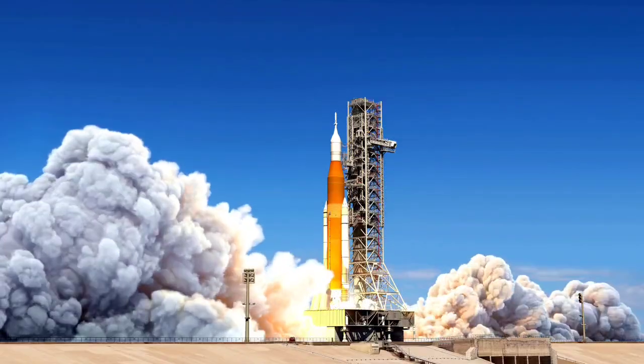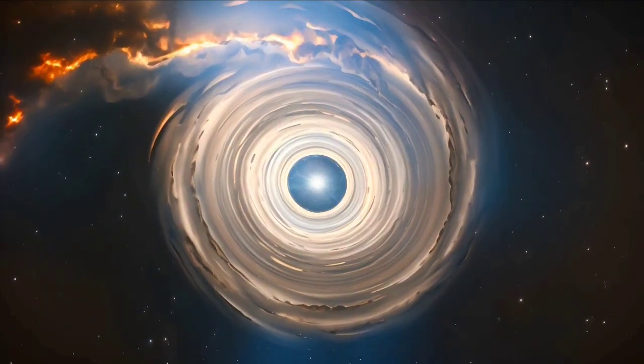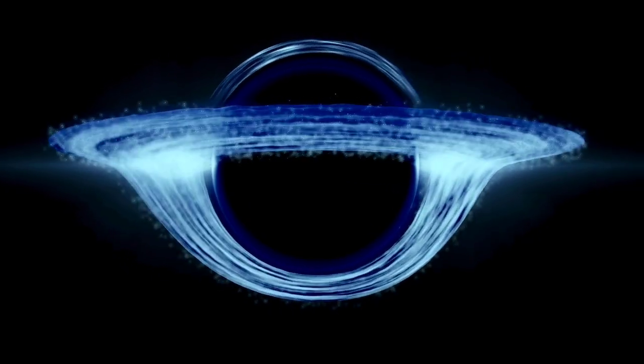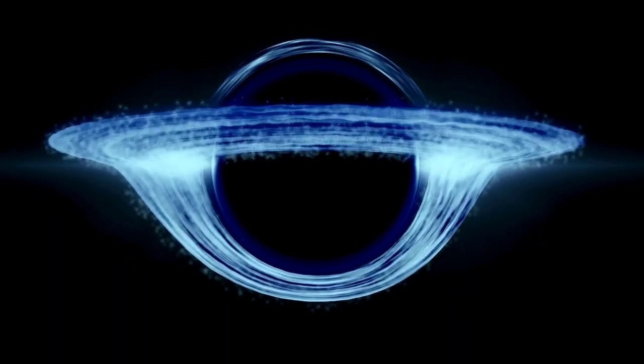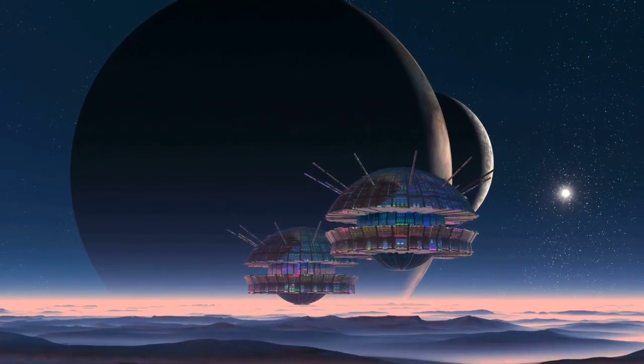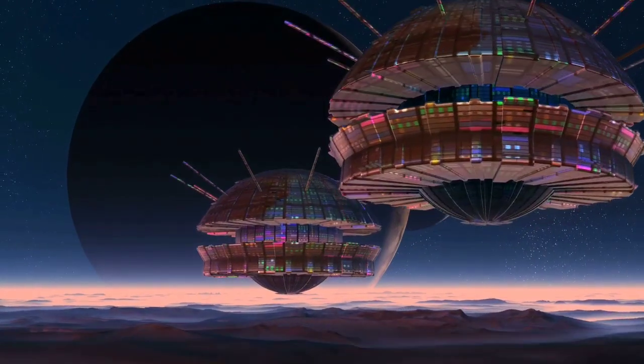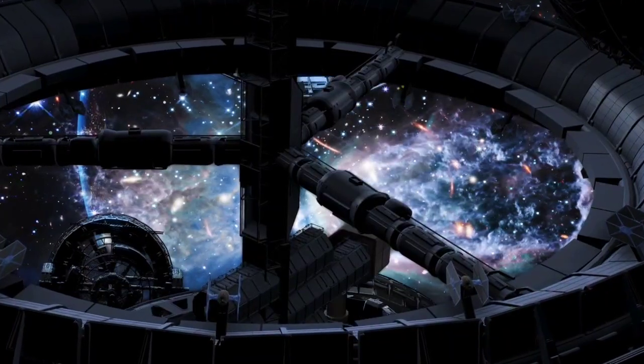Every orbit has a climax, the moment when an object gets closest to the sun, absorbing its energy and revealing its secrets. For 3 Atlas, that moment is coming. Astronomers call it perihelion, and it will happen on October 29, 2025. Space agencies are preparing for it like it's a test, because what happens then may determine whether 3 Atlas is a comet, a probe, or something else.